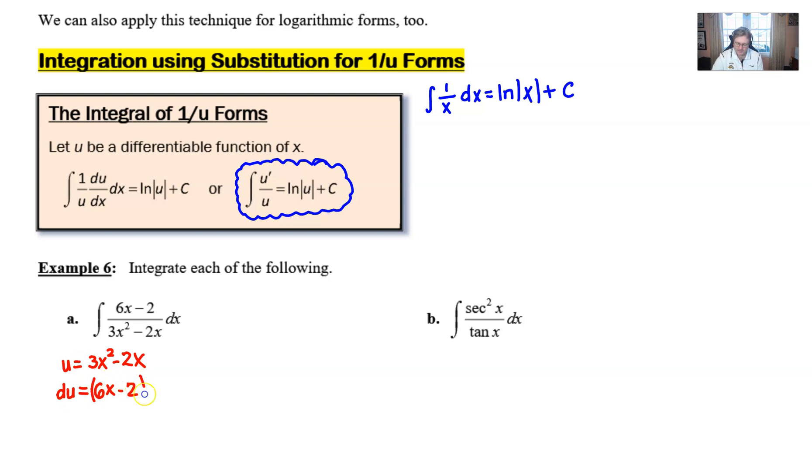And then, of course, we can bring the dx over to the right if we multiply it. And we see that, whoa, lo and behold, this 6x minus 2 dx is present in this integral and it would make for our numerator. And so essentially, you have yourself a 1 over u form where du is present.